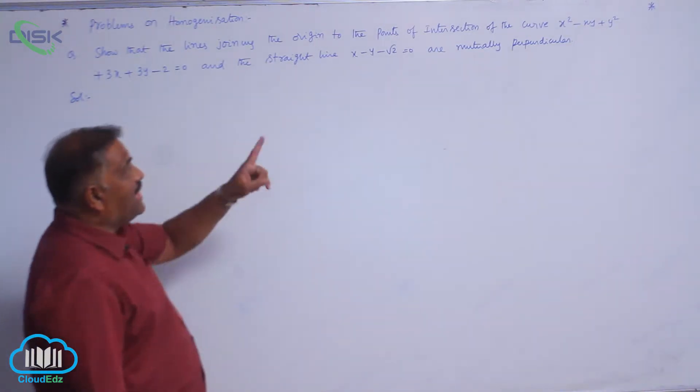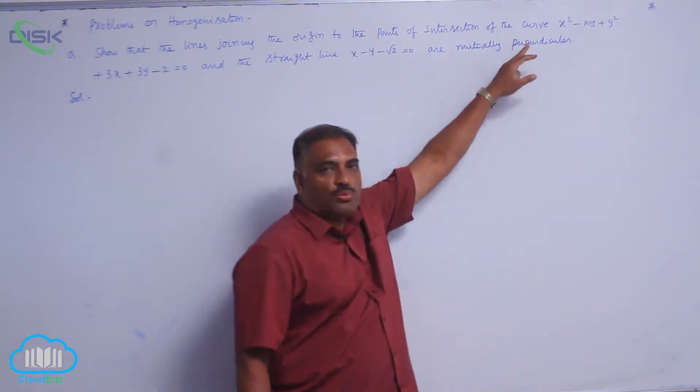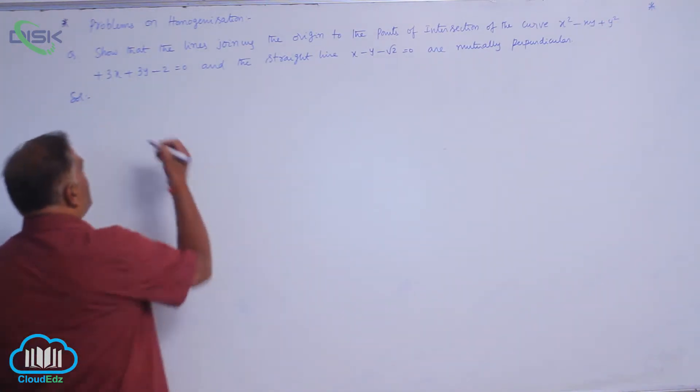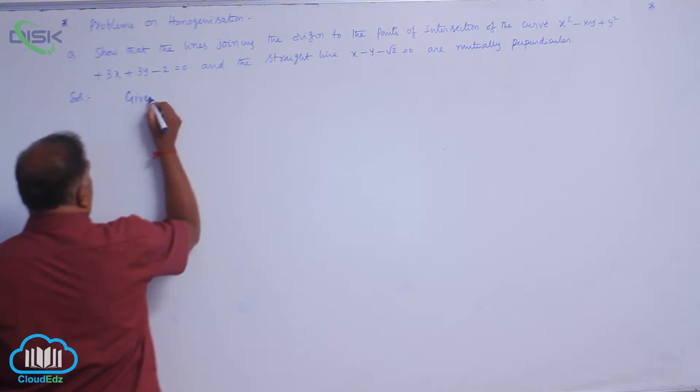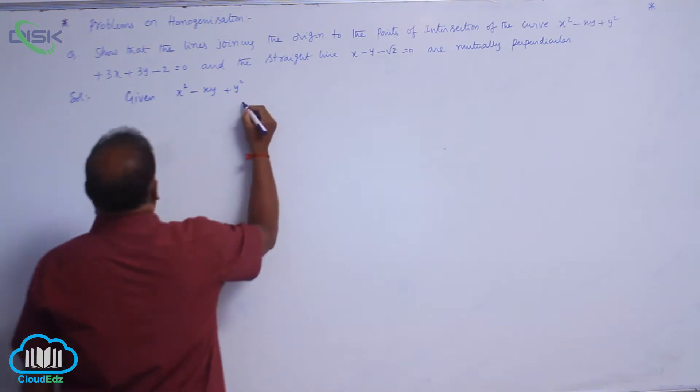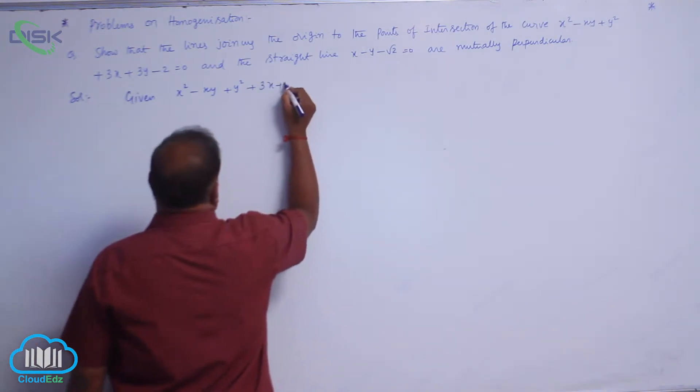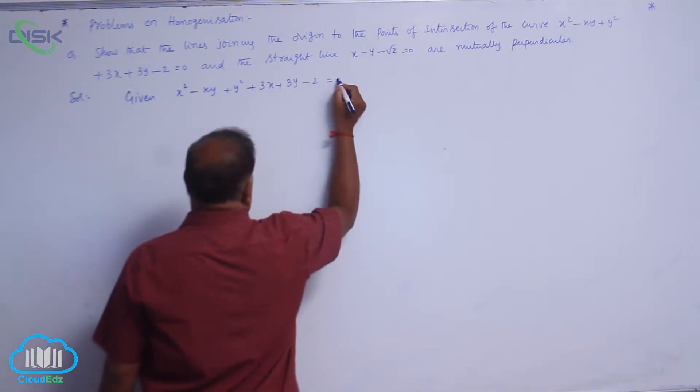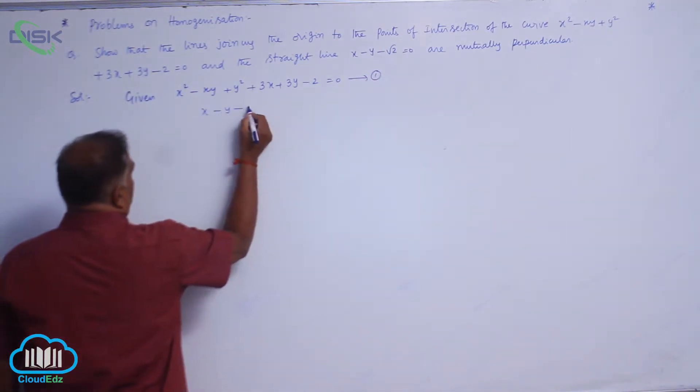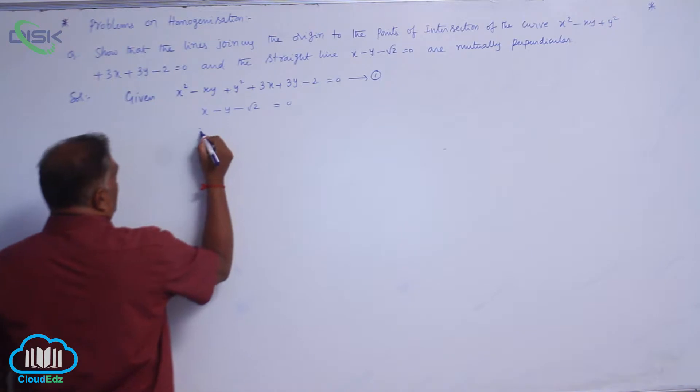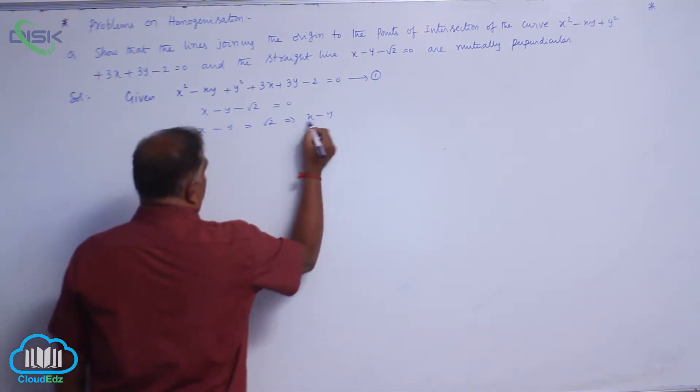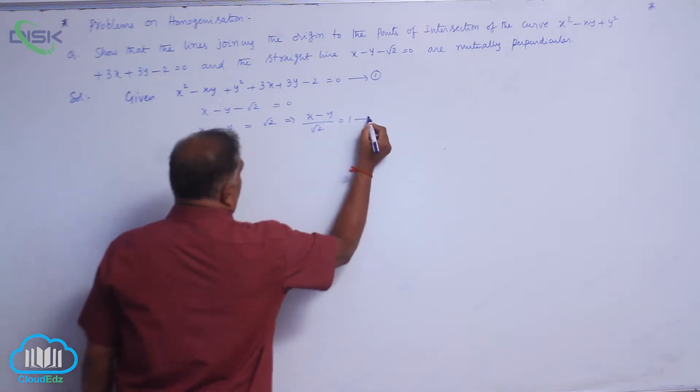He says very clearly the curve - that means it is not a pair of straight lines. So, given equation is x² - xy + y² + 3x + 3y - 2 = 0. Call it equation 1. x - y - √2 = 0, x - y = √2, (x - y)/√2 = 1. Equation 2.